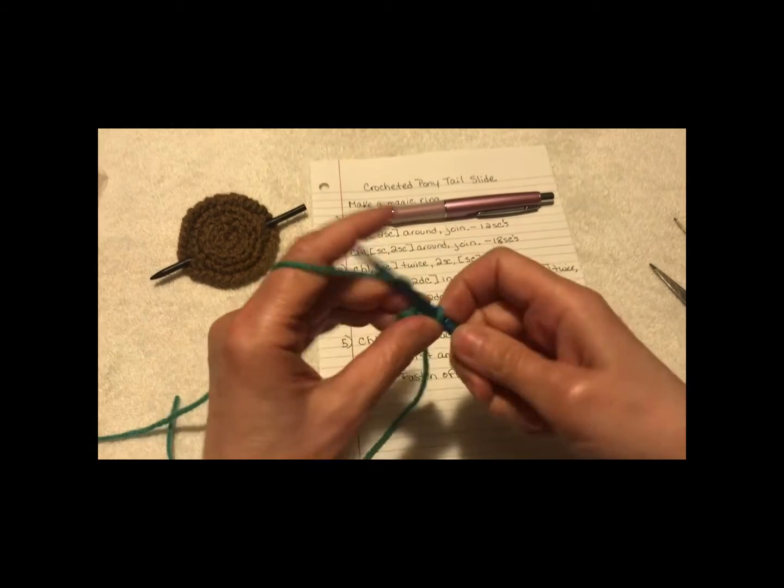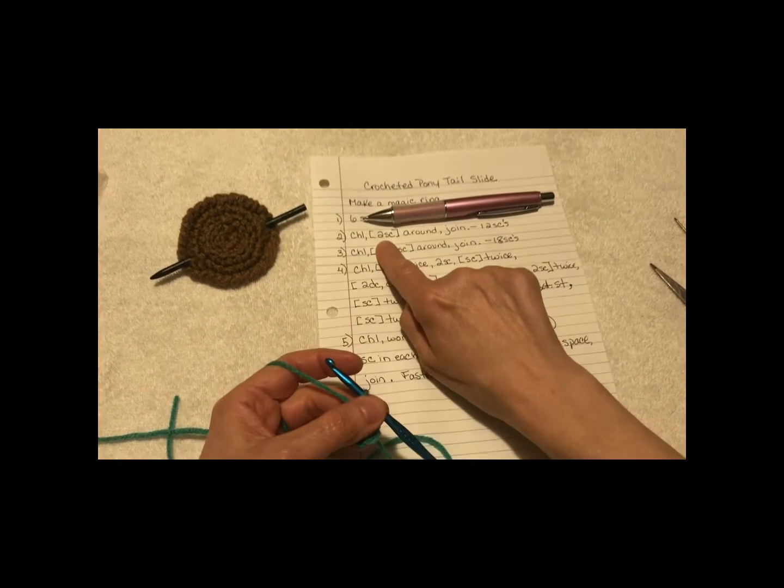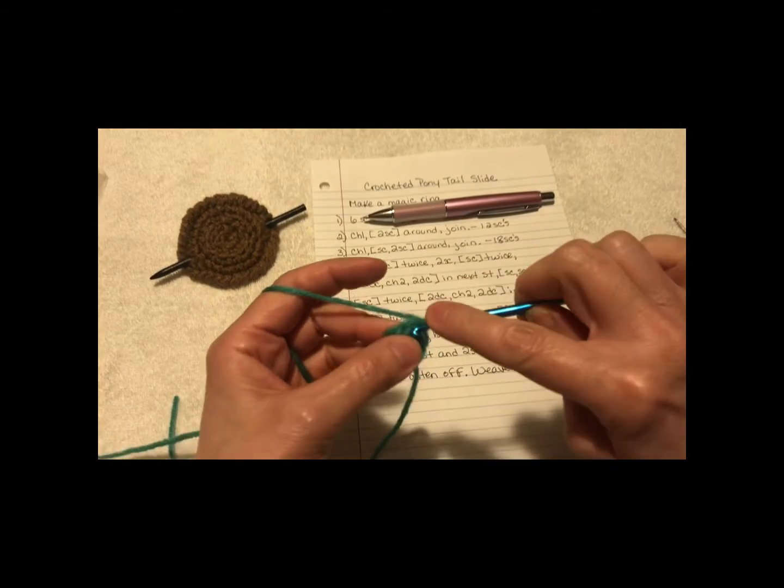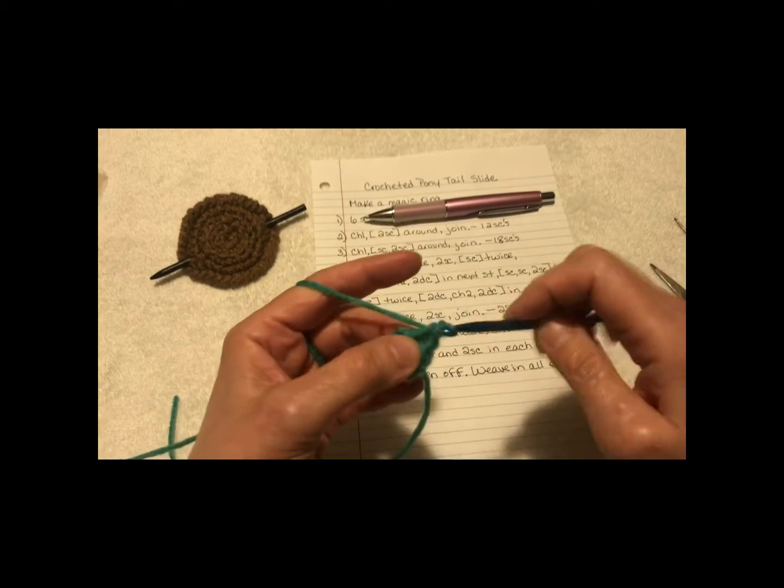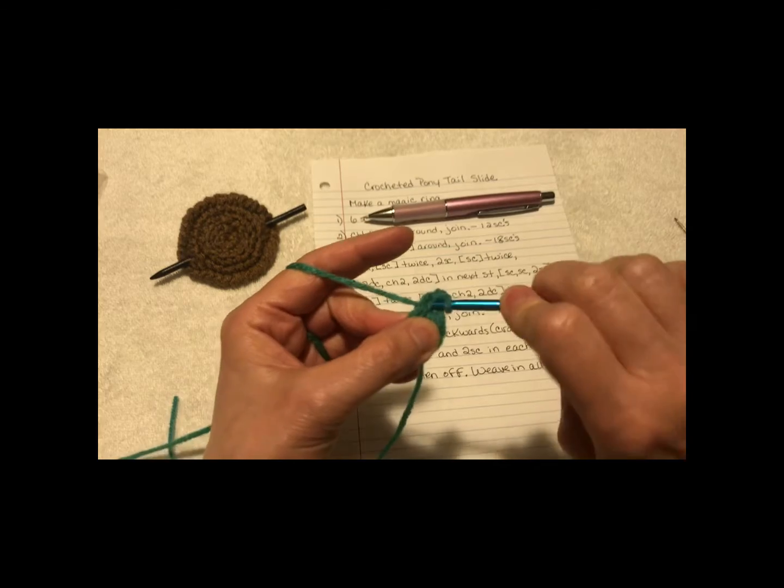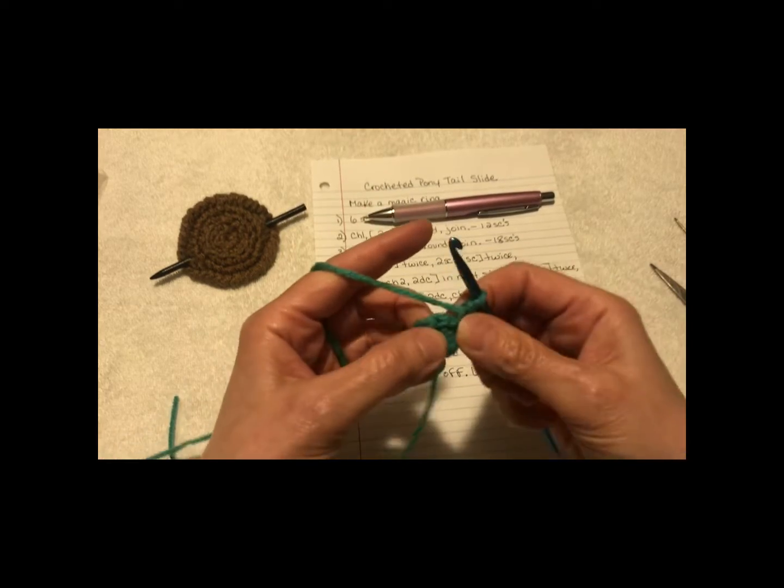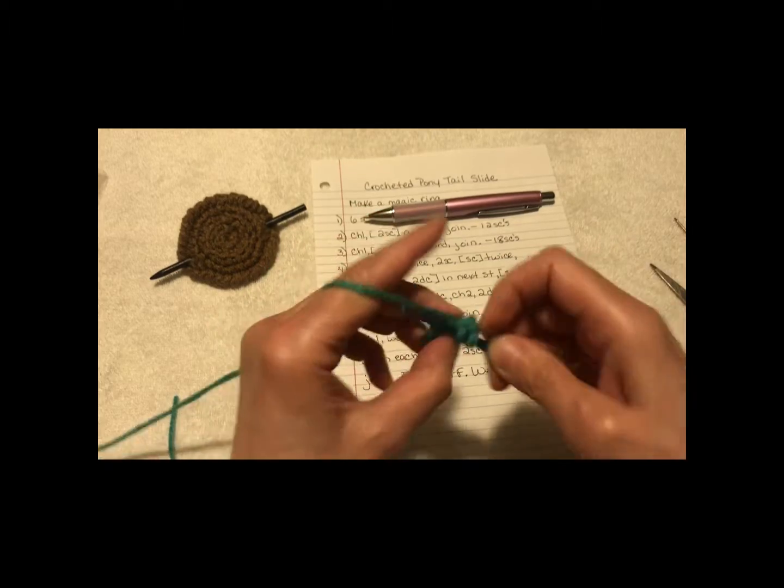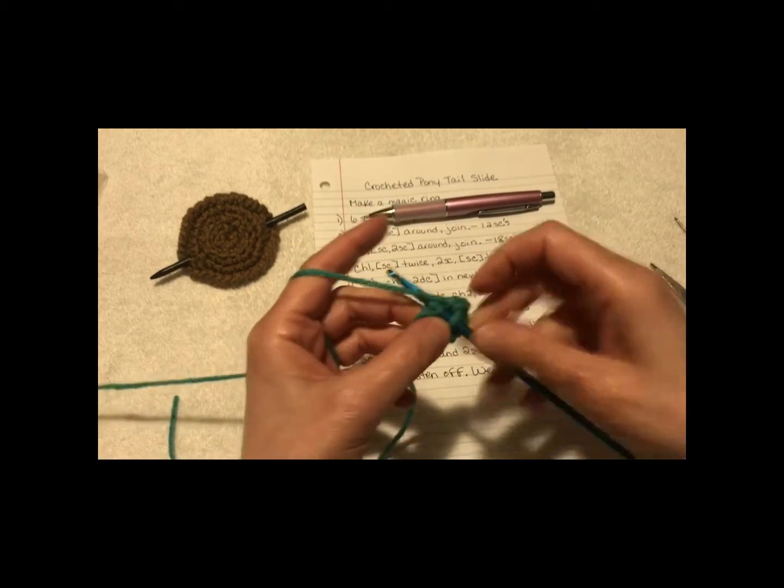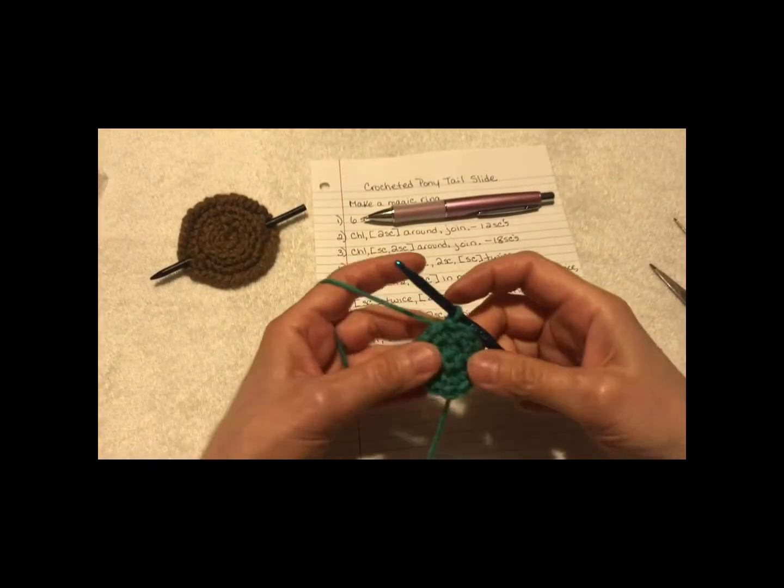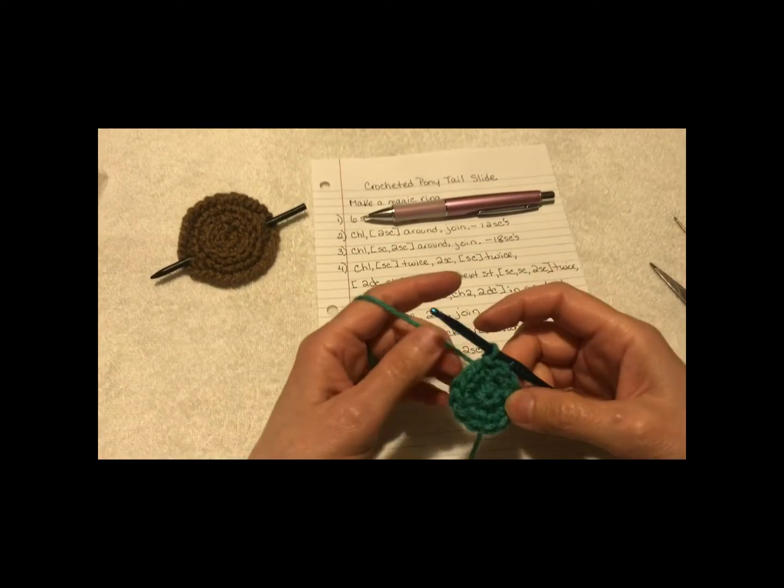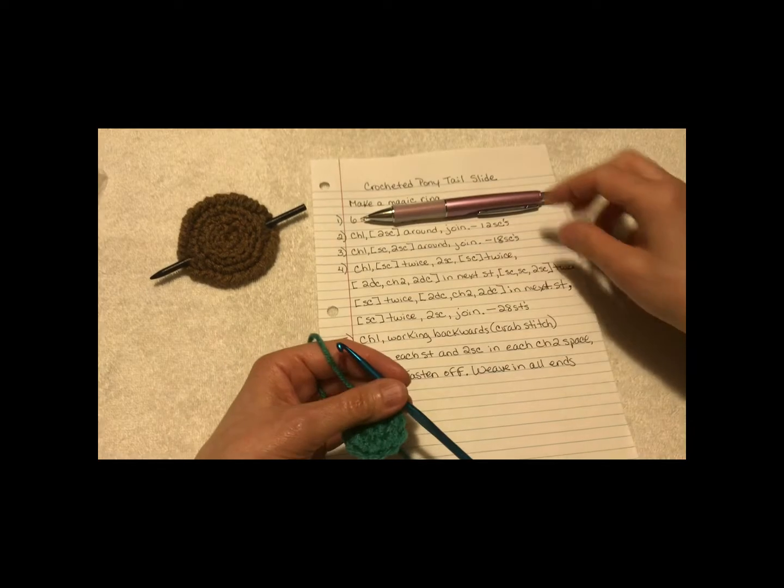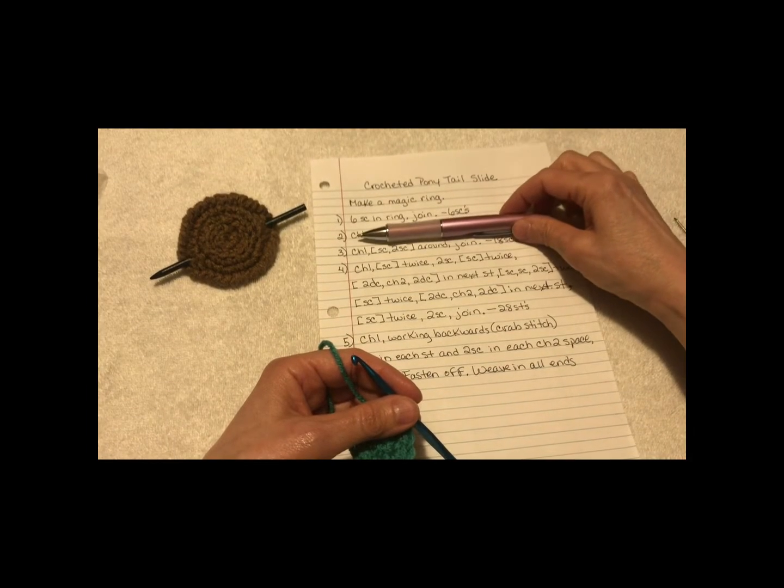Chain 1. 2 single crochets around. So, there would be 2 in each stitch. There's 1, 2. And the next one, 2. I'll meet you at the end. I got to the end. I joined. Now, count each stitch. Make sure that you have 12 before proceeding.